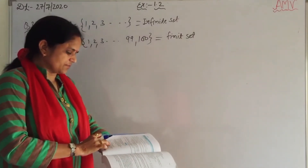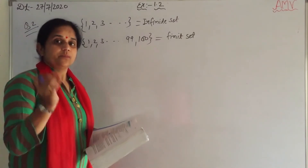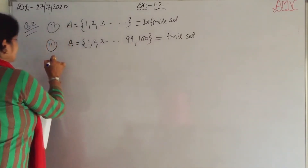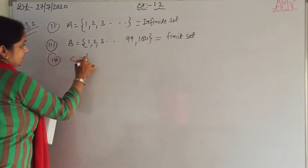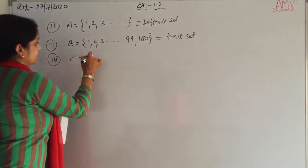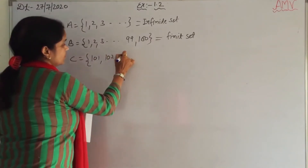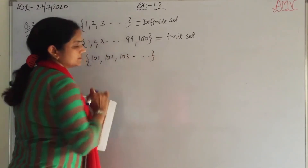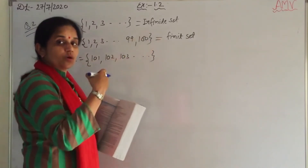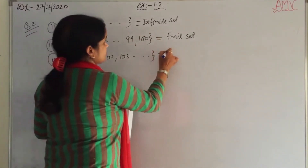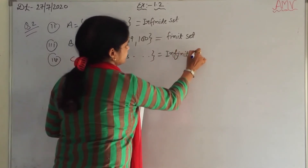Next: the set of positive integers greater than 100. Let it be C. That means 101, 102, 103, and so on. There are so many numbers — infinitely many. So it is an infinite set.